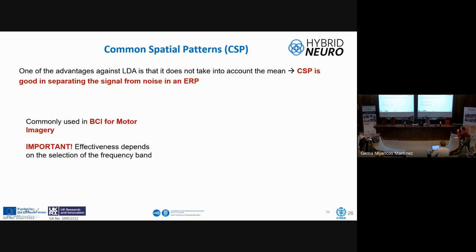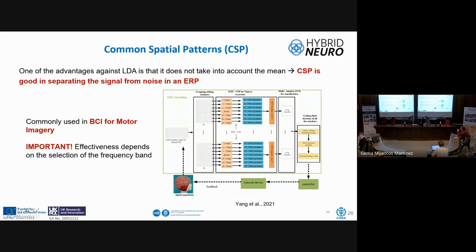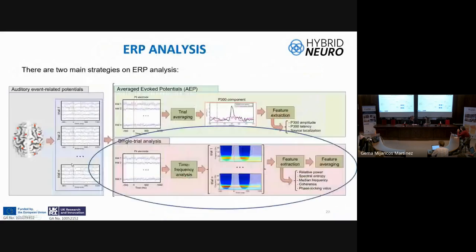CSP is also applied in BCIs, usually for motor imagery. In the pipeline: first we have the signal, then CSP is applied, and then we make the classification decision. With that, we finish the discussion of average evoked potentials and move on to single trial analysis.